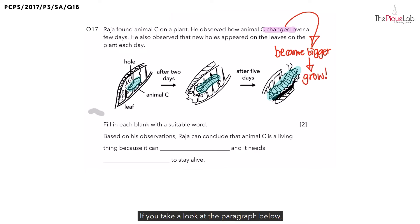If you take a look at the paragraph below, it is mentioned that based on his observation, Raja can conclude that animal C is a living thing.